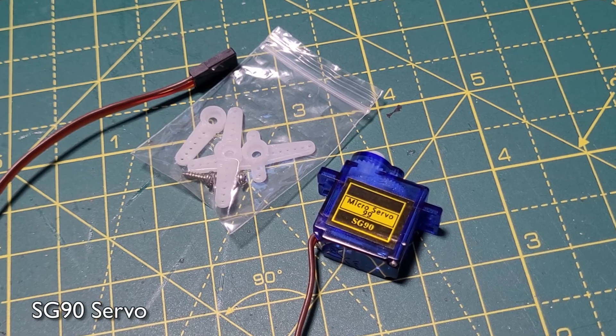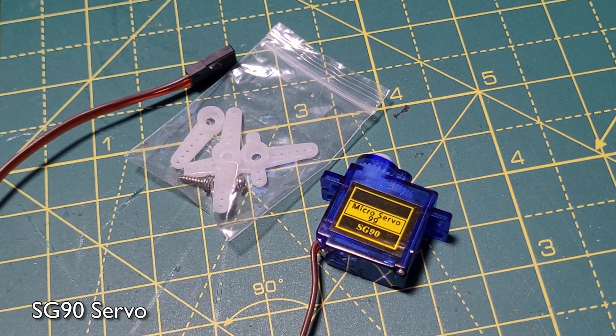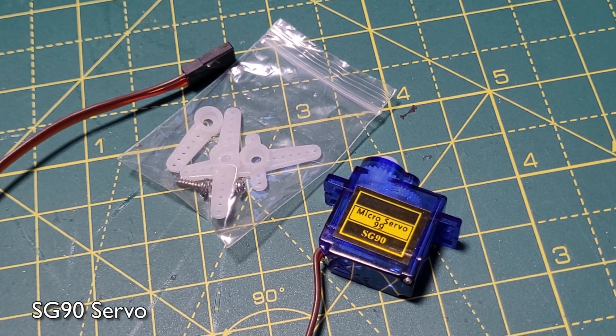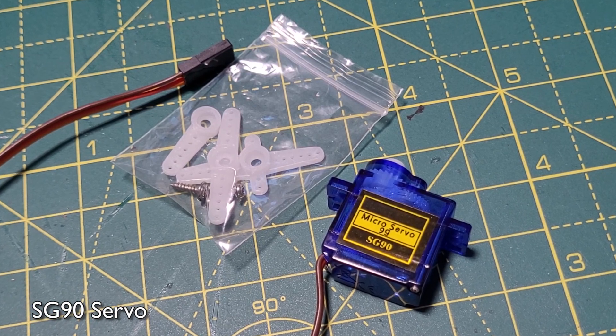For this you're going to need an SG90 servo. These are the standard cheap servos that you can find on Amazon and eBay. Try to look for the ones with metal gears rather than plastic as they tend to be higher quality. You'll need all the screws that come with it too.